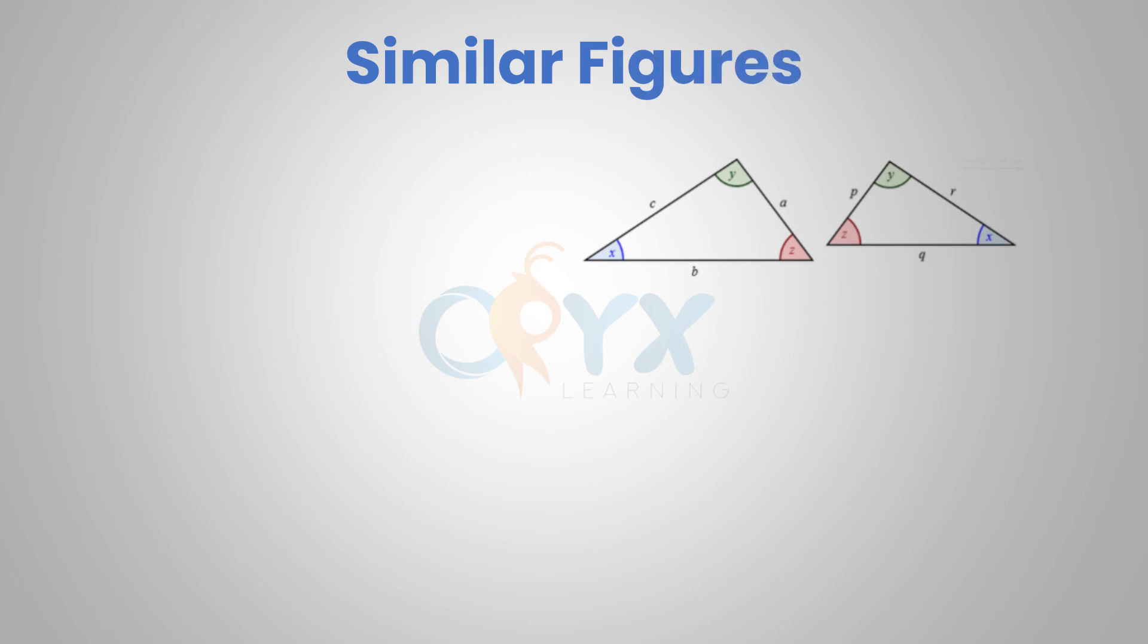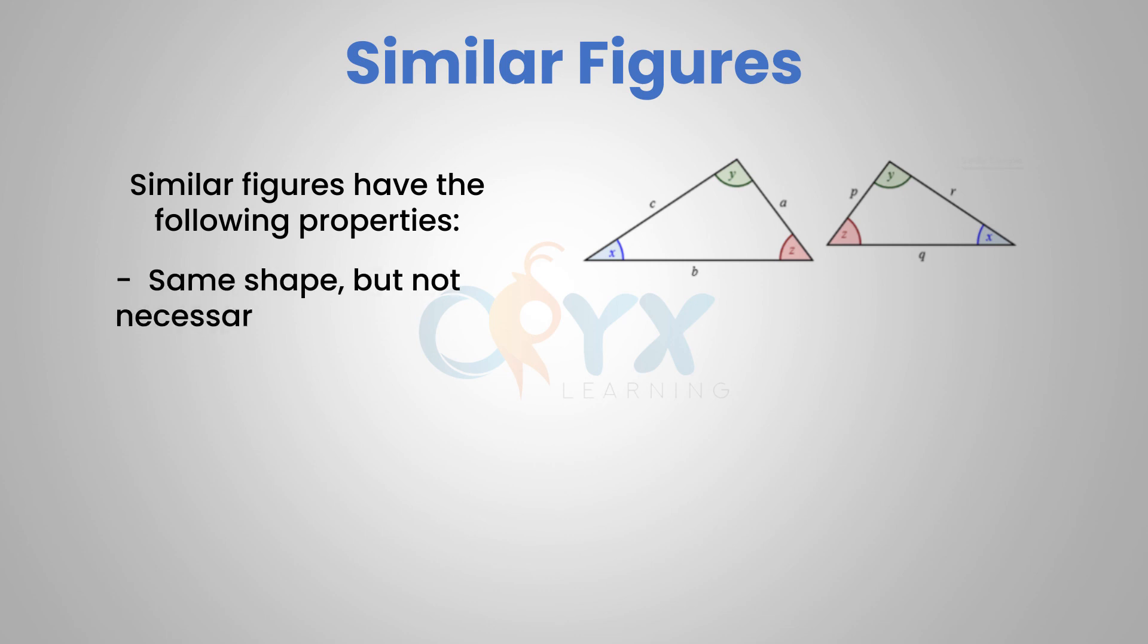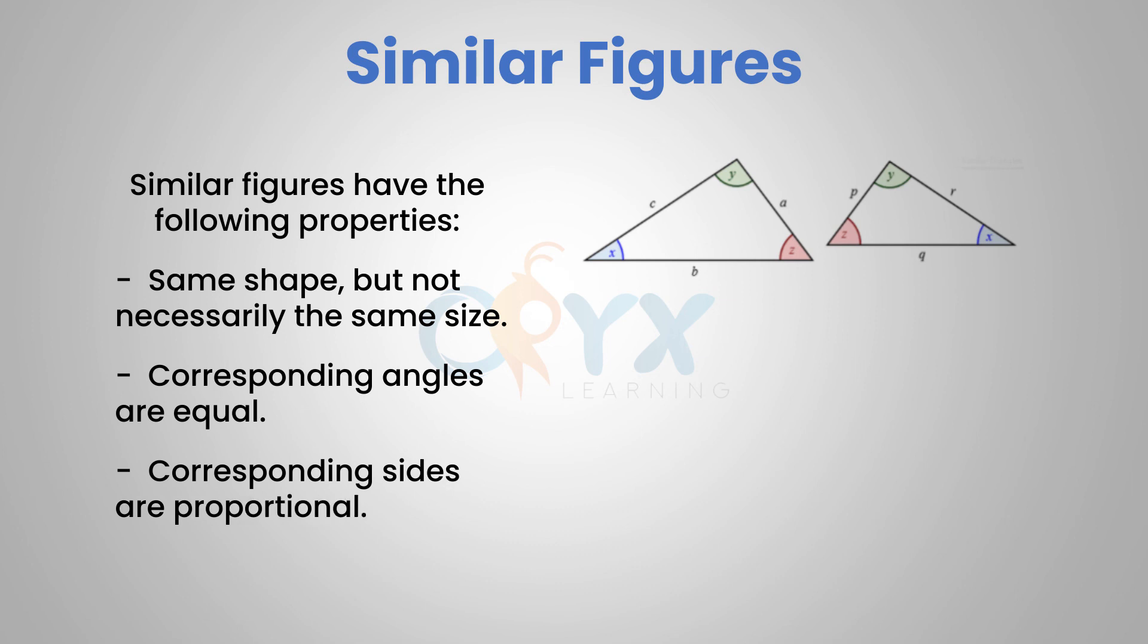So remember, similar figures have the following properties. They have the same shape but not necessarily the same size, corresponding angles are equal, and their corresponding sides are proportional. With the triangle shown, the proportion would be set up A over P equals B over Q equals C over R.